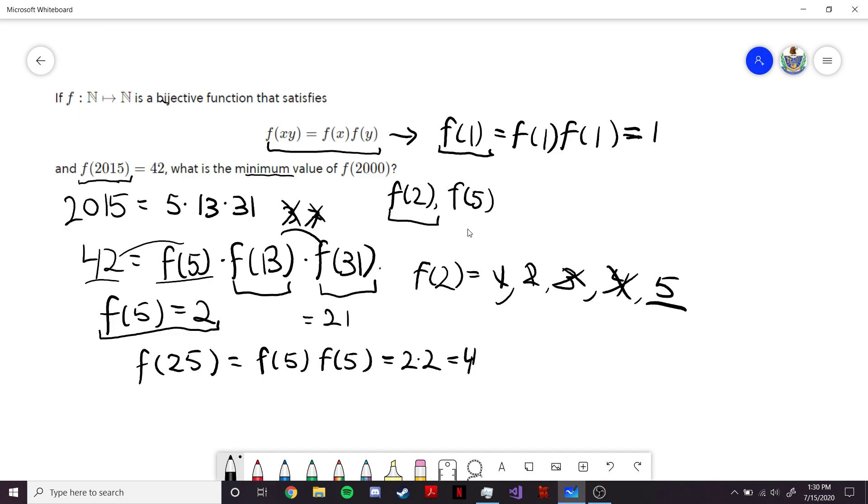Finally, all we have to do is break down 2000. 2000 is going to be 2 to the 4 times 5 cubed. Which means f(2000), since f(2) is 5, it's going to be 5 to the 4. And f(5) is 2, so it's going to be 2 cubed. And this is 5000.